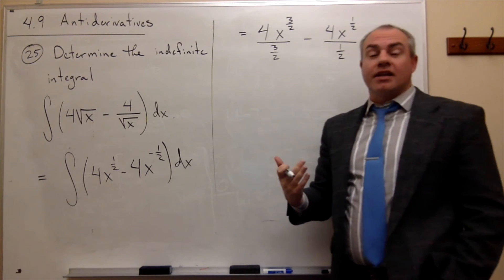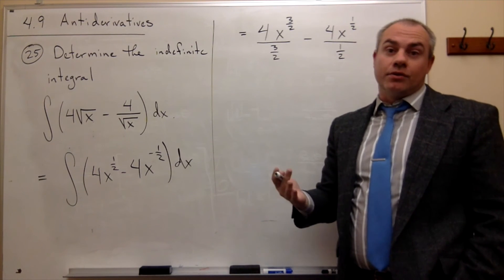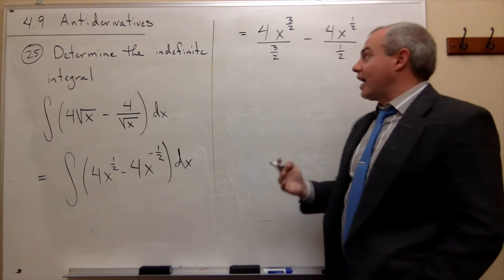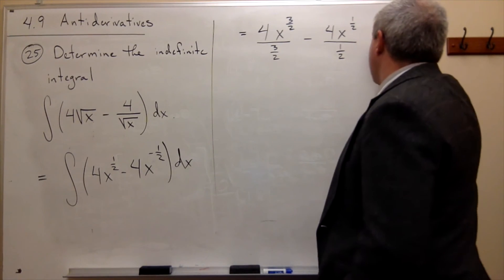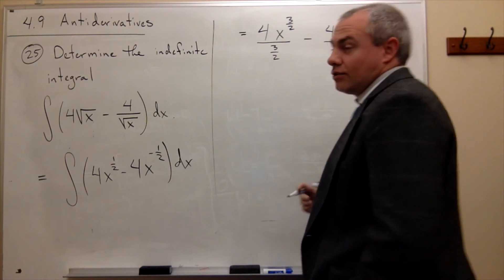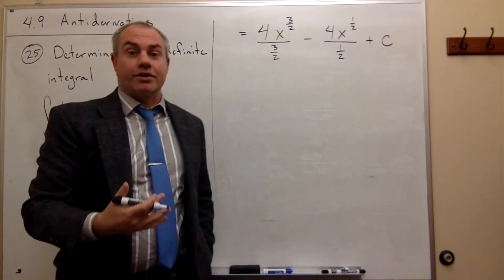And then the very last thing that I need to do is I need to account for the fact that it could have any constant at the end. So I'm going to add C, or my constant of integration.